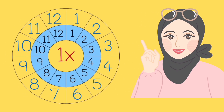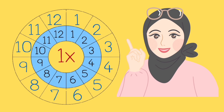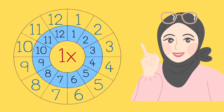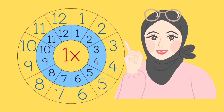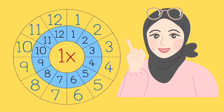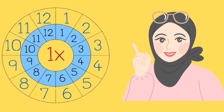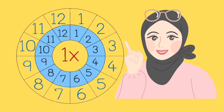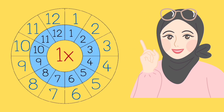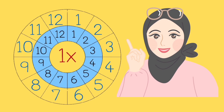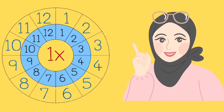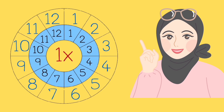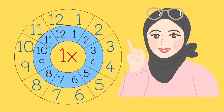1 1s are 1, 1 2s are 2, 1 3s are 3, 1 4s are 4, 1 5s are 5, 1 6s are 6, 1 7s are 7, 1 8s are 8, 1 9s are 9, 1 10s are 10, 1 11s are 11, 1 12s are 12. It's the table of 1.